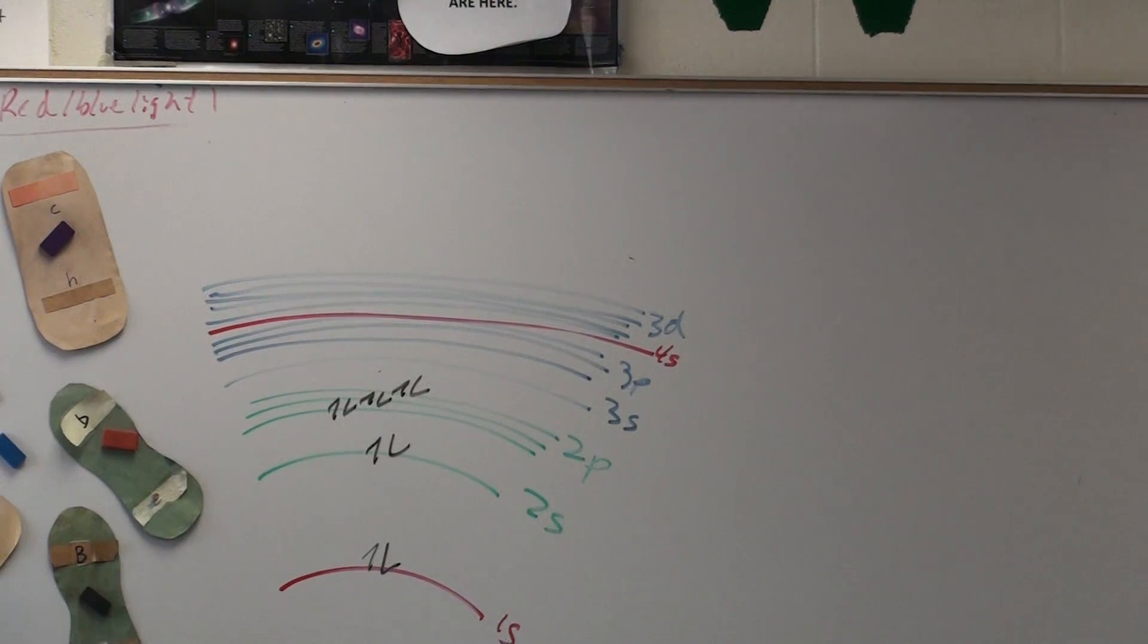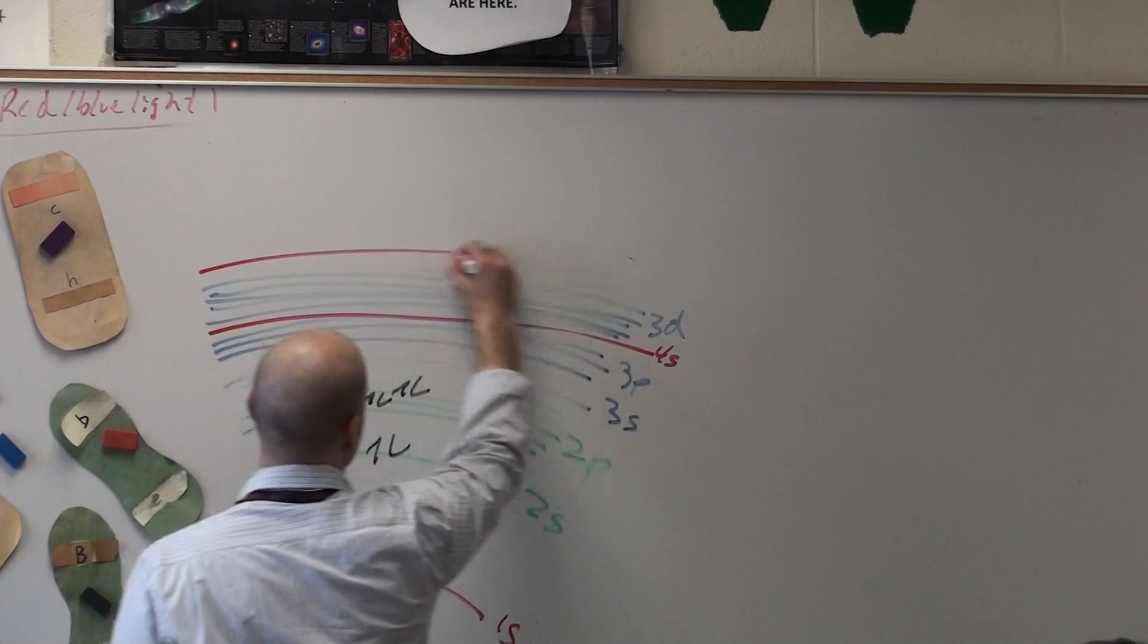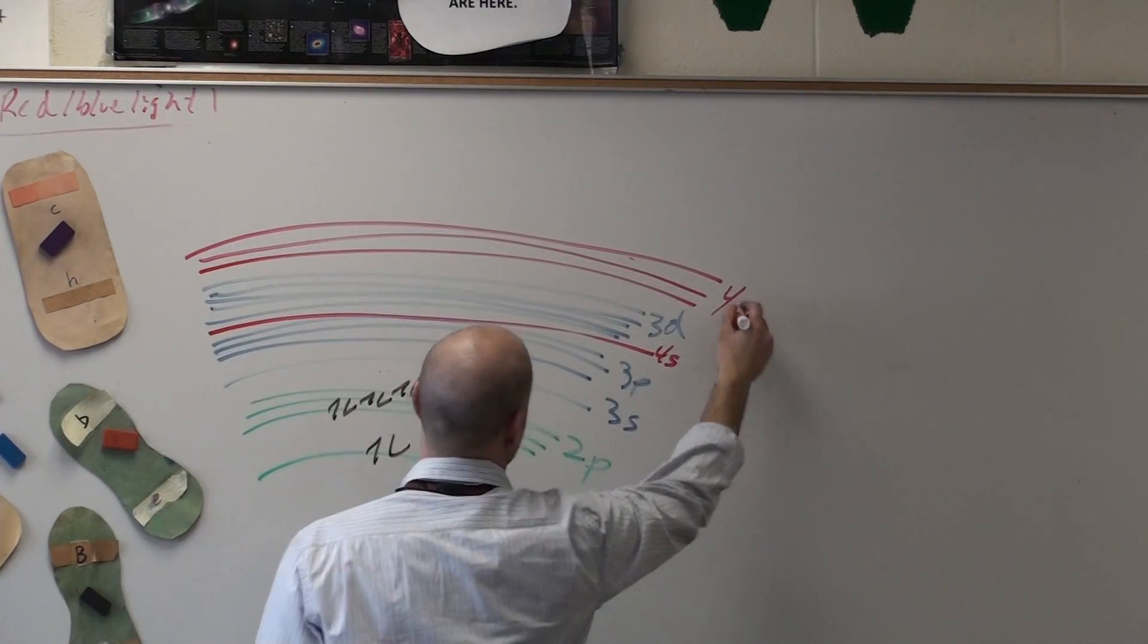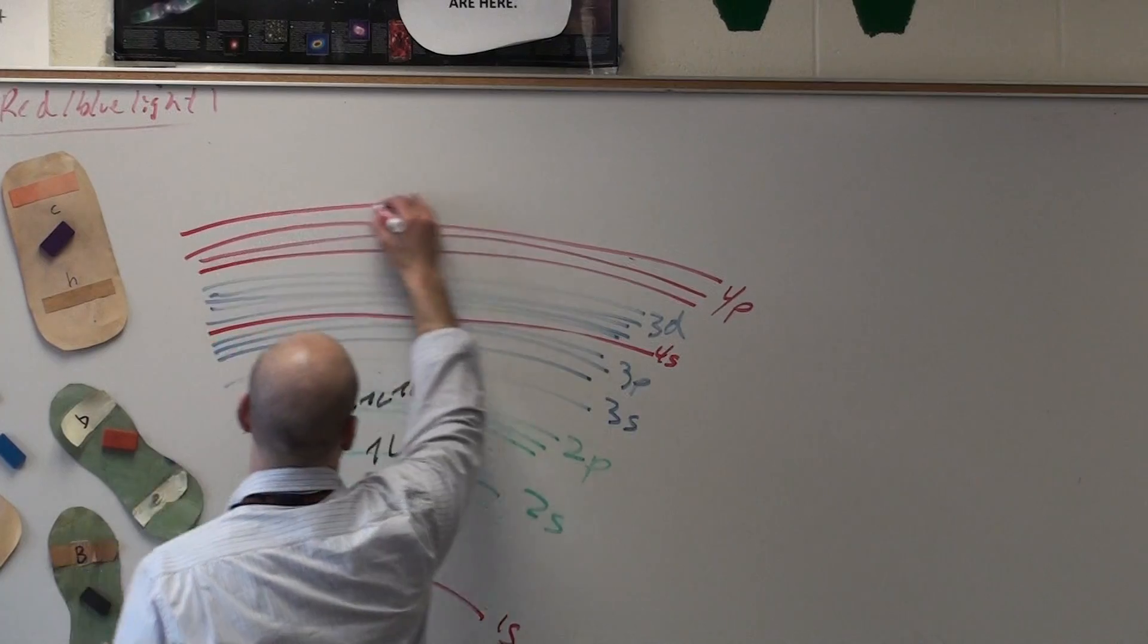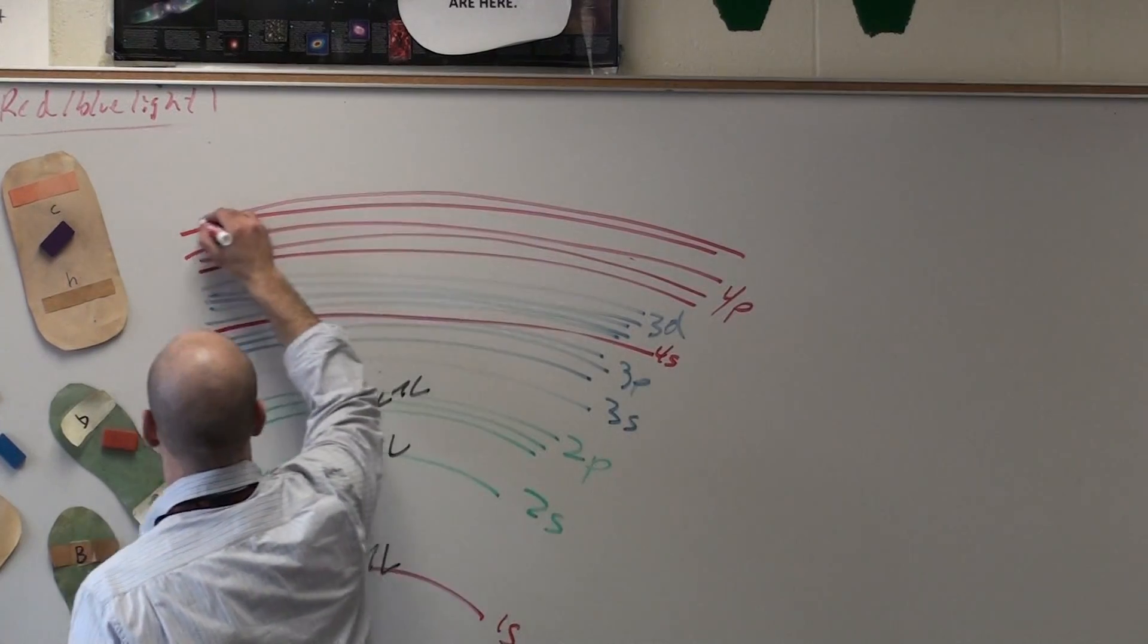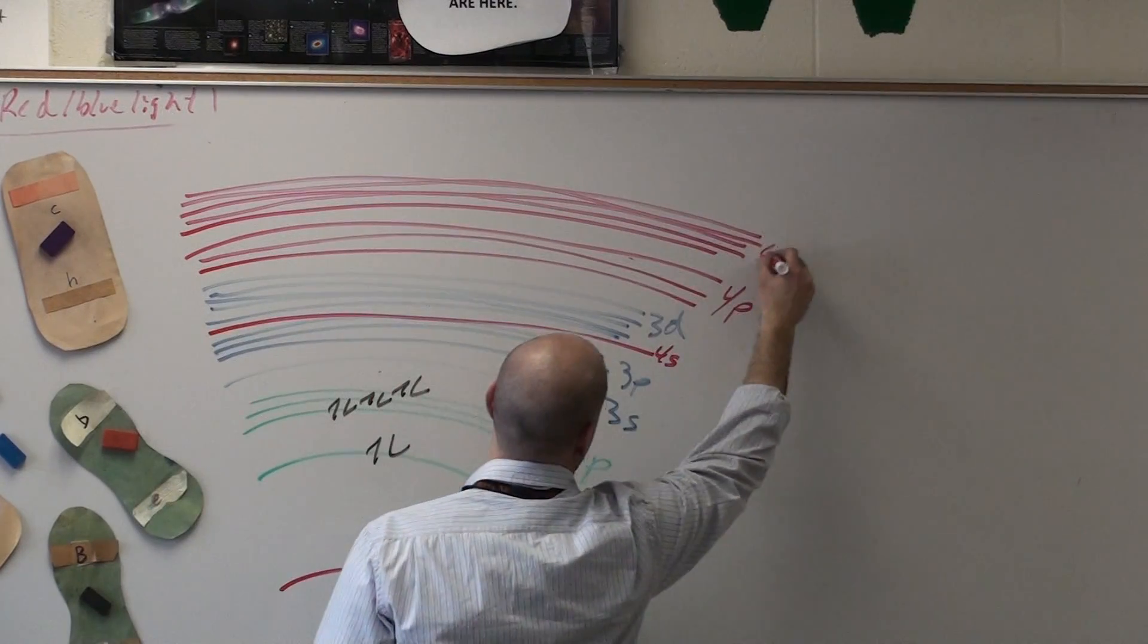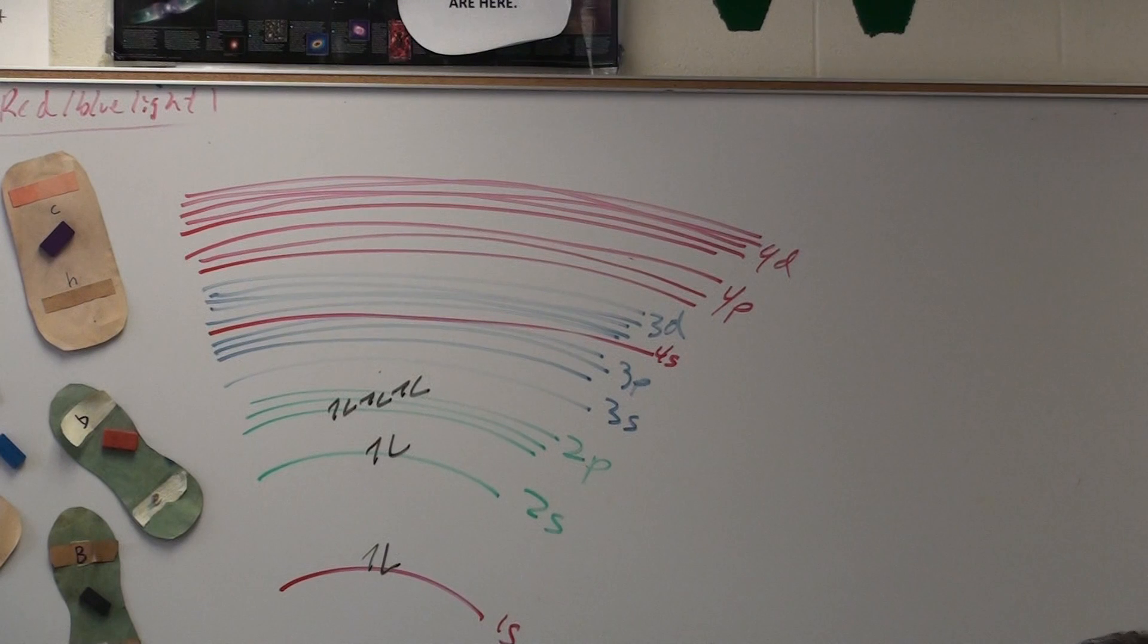How many 3d are there? Wait, between 3d and 3d? Between the 3p and the 3d is where the 4s is. And then comes the 4p. And then we draw the 4d. And now you should probably just stop and watch before your frustration gets the better of you.